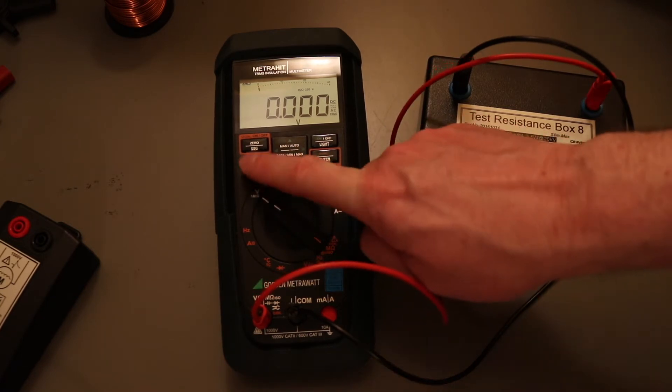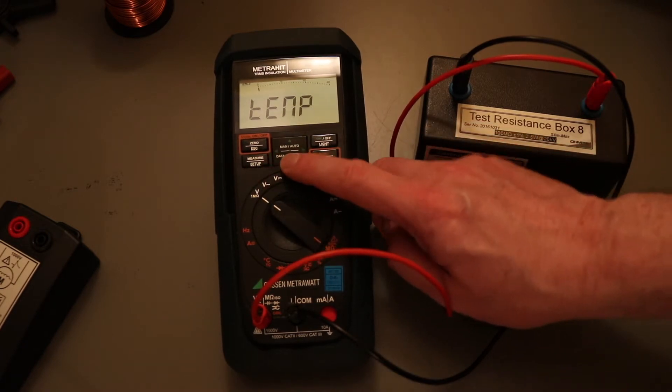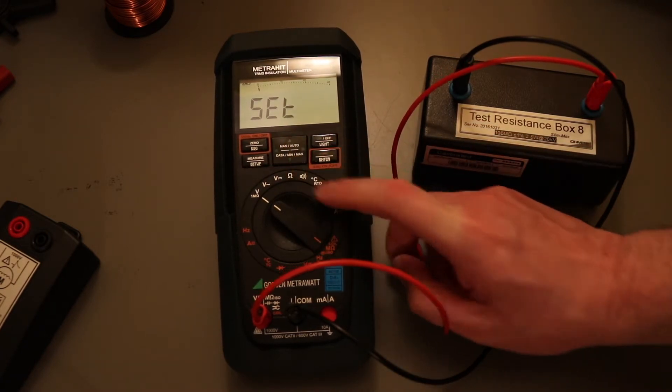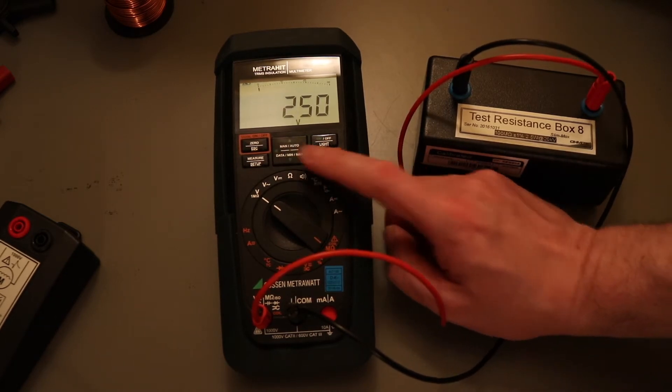The voltage functions. The first way of changing the voltage is to go through the menus. Go through to the set menu, enter that. Then you go down to UISO, enter that.